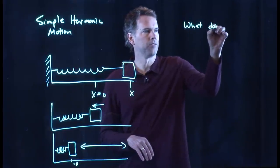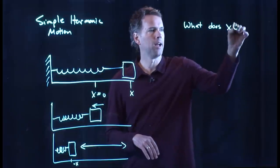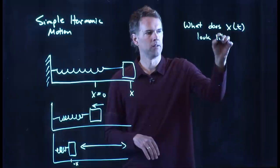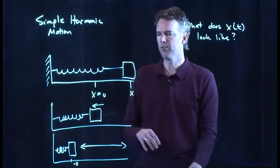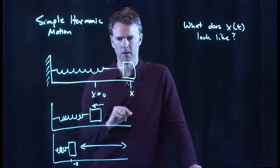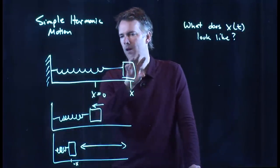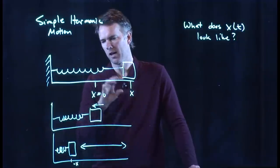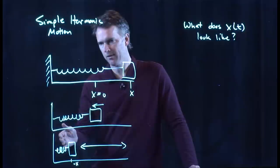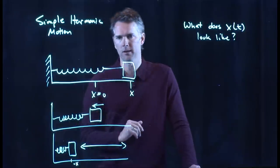So let's ask the following question. What does x as a function of time look like? What is the position of this thing as a function of time? Well, we know we start out here at some amplitude. We know it's going to move to the left. It's got to go through x equals zero. It's got to go to some negative amplitude. And then it's going to go back and forth.